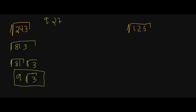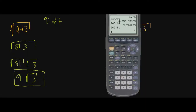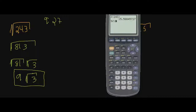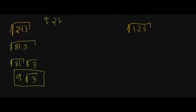And that's my final answer. If you don't believe me, we can go to the square root of 243 and get 15.588. Now let's do 9 times the square root of 3 — we get the exact same answer. Go ahead and try doing this problem on your own.